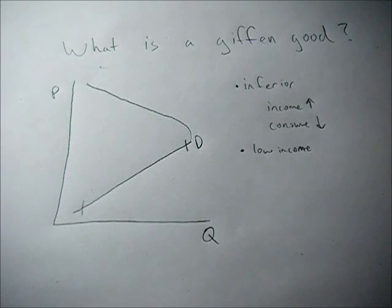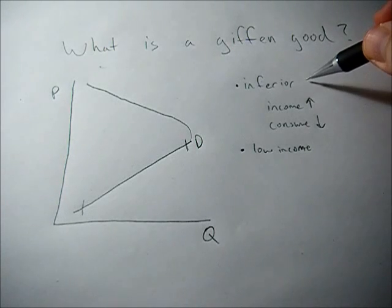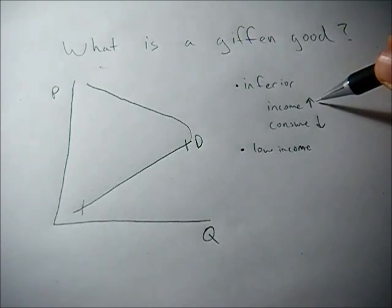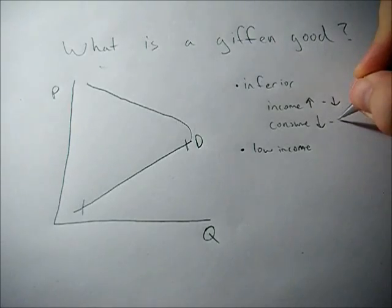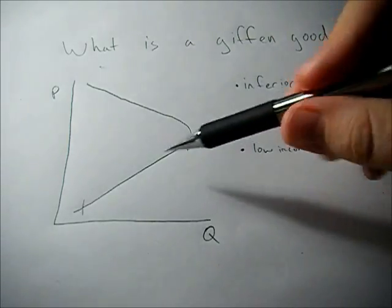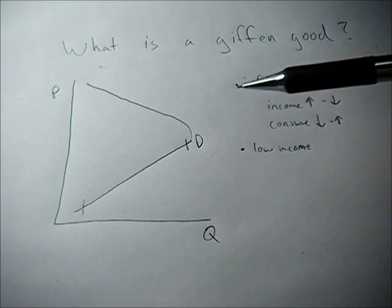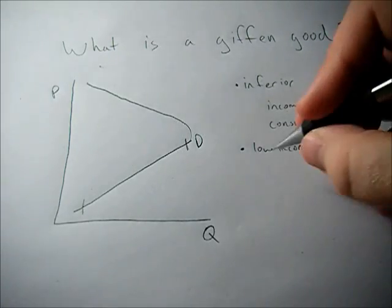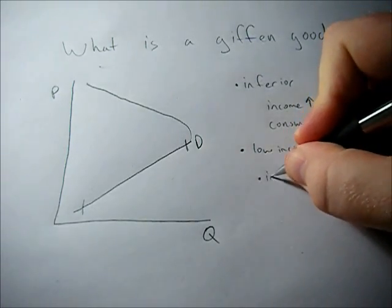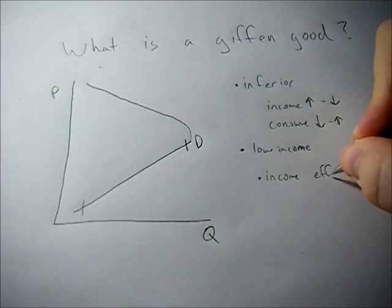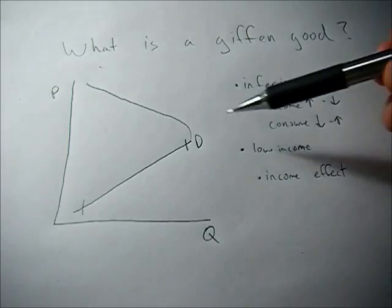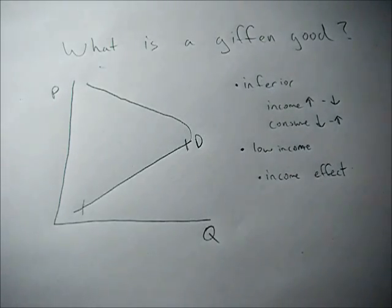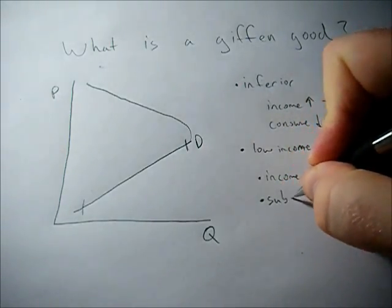So what makes the good a Giffen Good is that it's inferior, so income goes down, say consumption will go up. So when the price of a good goes up that's similar to income going down because we're now spending more on that good so it's like our income is going down. That's called the income effect. And so that's one of the effects that makes up the slope of the demand curve. The second is the substitution effect.